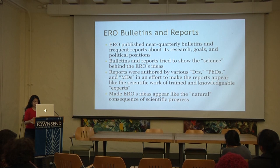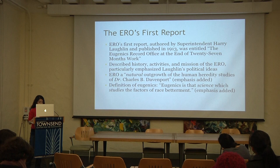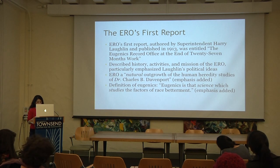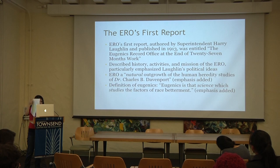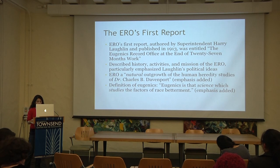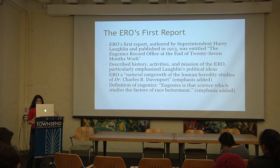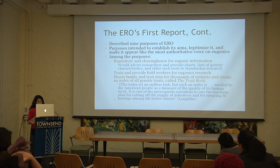The ERO's first report was authored by Harry Laughlin and published in June 1913, entitled 'The Eugenics Record Office at the End of 27 Months Work.' In this report, Laughlin offered a brief history of the ERO and set forth an overview of its mission. He described the ERO as a natural outgrowth of Davenport's human heredity studies, and defined eugenics as 'that science which studies the factors of race betterment' — invoking highly scientific claims that race exists, that there are superior and inferior races, and that the racial composition of a population can be improved. Laughlin then described nine purposes of the ERO, the first being to serve as a repository and clearinghouse for eugenic research and research practices.